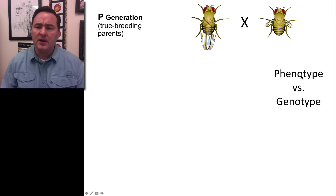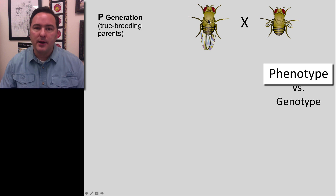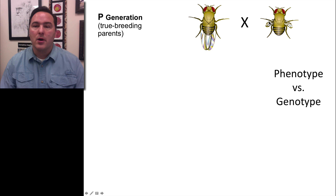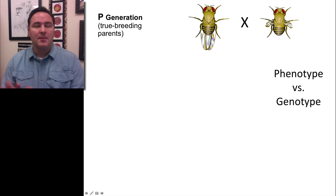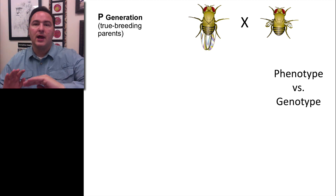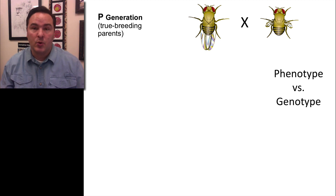Before we talk about the results, I want to define two important words. Phenotype is what we see — in this case, we see either normal wings or vestigial wings. That is the phenotype. The genotype is the underlying genetics that is causing either normal wings or vestigial wings. Just realize that the genotype is the underlying genetic information that then causes the phenotype, which is what we actually see — what is expressed.